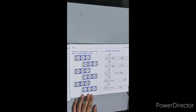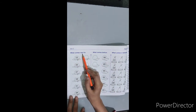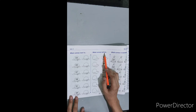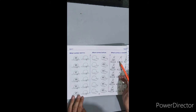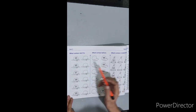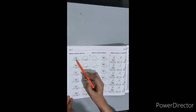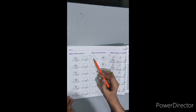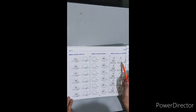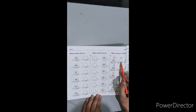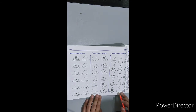Now move to page number 60. First of all, write down the date here. 'What comes next to?' means what comes after the given digit. 'What comes before?' means the one before. 'What comes in between?' means the one in the middle. Dear children, we have done this many times before — complete this page yourself. I'll do the first row: 23 — what comes next to 23? 24. 36 — what comes before 36? 35. 21 and 23 — what comes in between? 22. You must complete this page by yourself. Thanks for watching.